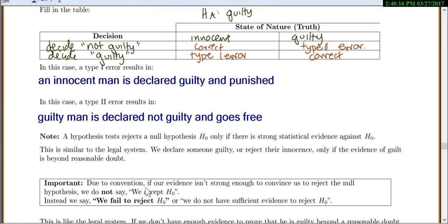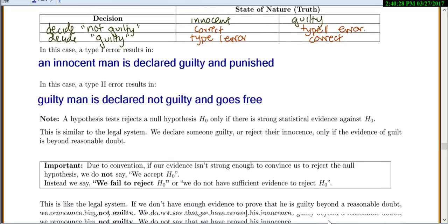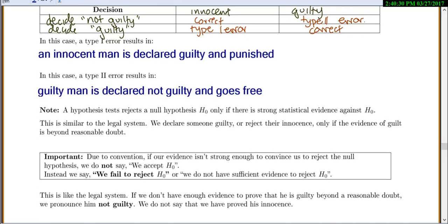Due to convention, if our evidence isn't strong enough to convince us to reject the null hypothesis, we do not say we accept the null. Instead, we say we fail to reject the null or we don't have sufficient evidence to reject it. This is like the legal system - if we don't have evidence to prove that he's guilty beyond a reasonable doubt, we pronounce him not guilty. We do not say that we have proved his innocence.